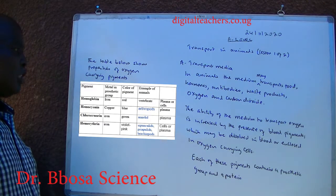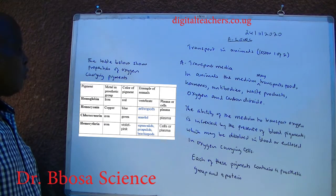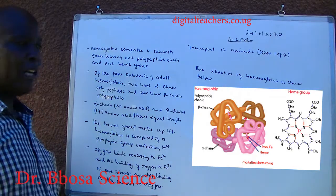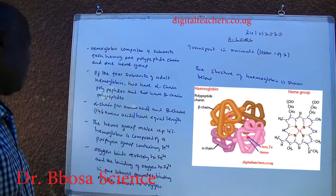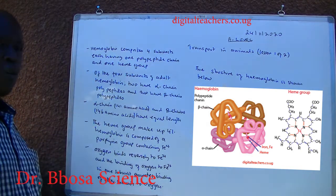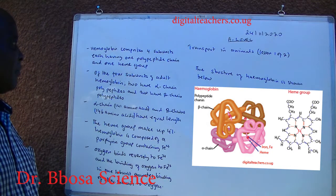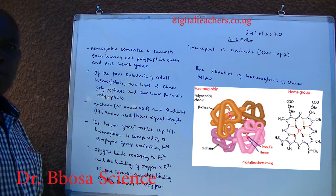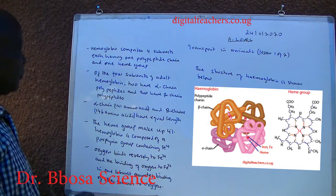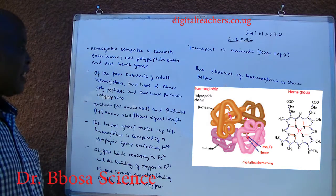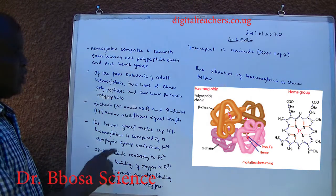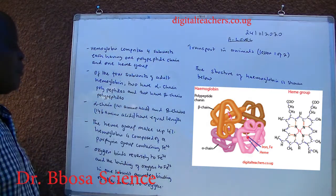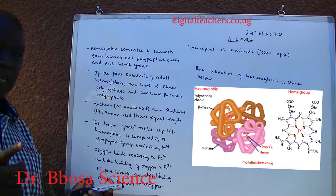The table below shows properties of oxygen-carrying pigments. The structure of hemoglobin is shown below. Hemoglobin comprises four subunits, each having one polypeptide chain and one hemoglobin group. Of the four subunits of adult hemoglobin, two have alpha chain polypeptide and two have beta chain polypeptide.